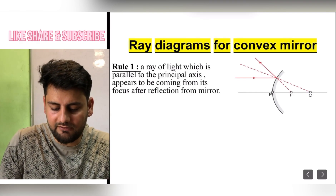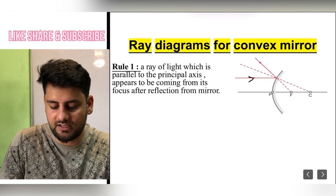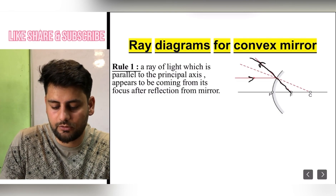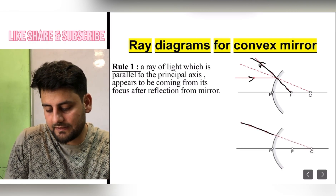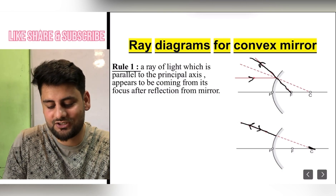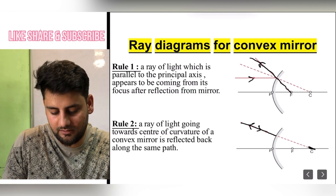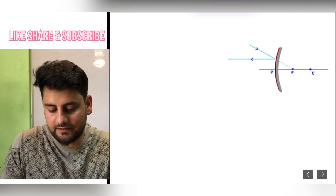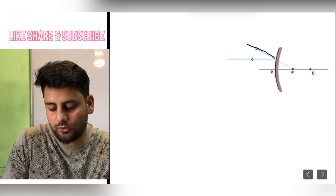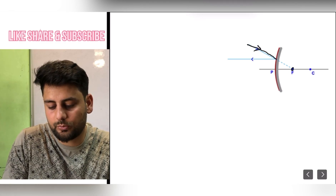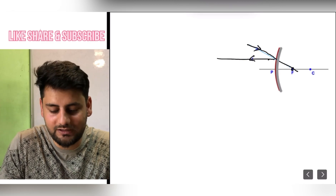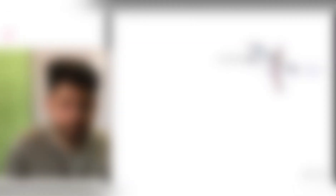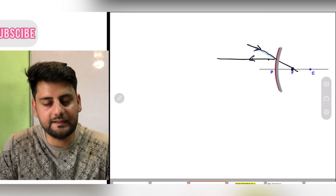So here is the first diagram: when the ray is parallel to the principal axis, after reflection it appears to be coming from the principal focus. The second: if a ray appears to be going through the center of curvature, after reflection it goes exactly the same path back. The third case: if a ray is incident such that it appears to be going through the principal focus, after reflection it goes parallel to the principal axis.